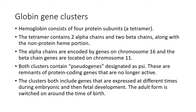We're going to have different examples of the globin proteins that are produced at different times during development. These occur on two different chromosomes — chromosome 16 for the alpha chains, and the beta chains are located on chromosome 11. Both of these clusters also include some pseudogenes, called psi, which are remnants of protein-coding genes that are no longer active.